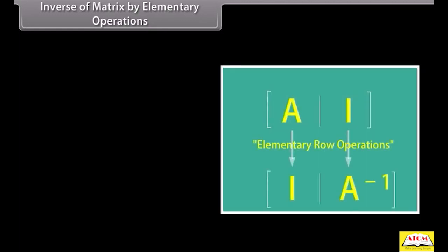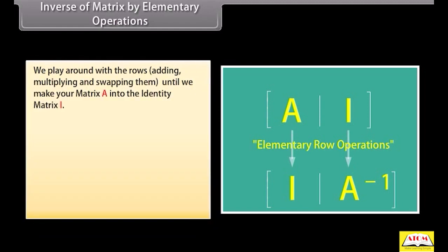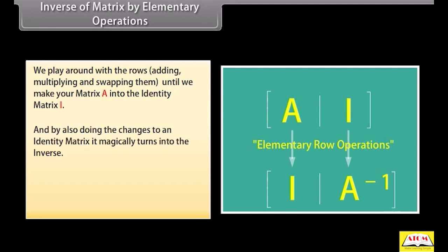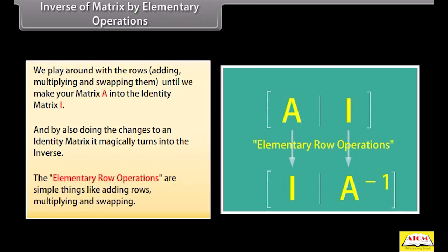Inverse of matrix by elementary operations: This is a fun way to find the inverse of a matrix. We play around with the rows — adding, multiplying, and swapping them — until we make matrix A into the identity matrix I. By also doing the same changes to an identity matrix, it magically turns into the inverse. The elementary row operations are simple things like adding rows, multiplying, and swapping. Let us go through an example in the next screen.